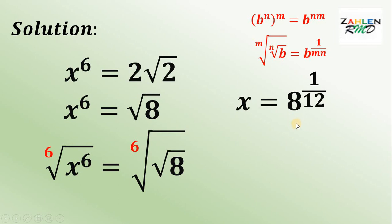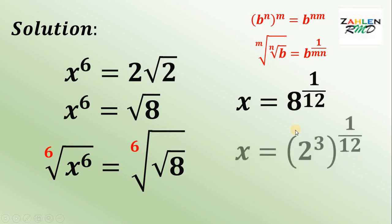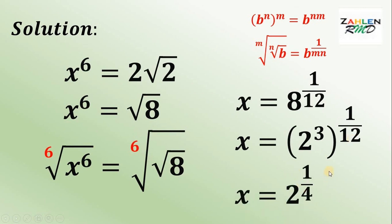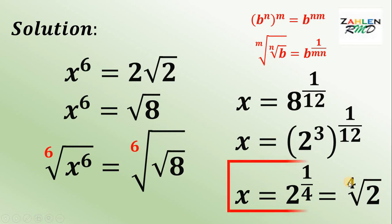Don't forget, we need to simplify our answer. Take a look at 8: it can be written as 2 raised to 3. So we have 2 raised to 3, raised to 1 over 12. Applying the law of exponents, b raised to n raised to m equals b raised to n times m, it follows that we have 3 times 1 over 12, or simply 1 fourth. Therefore, x equals 2 raised to 1 fourth, or simply the 4th root of 2. And we're done.